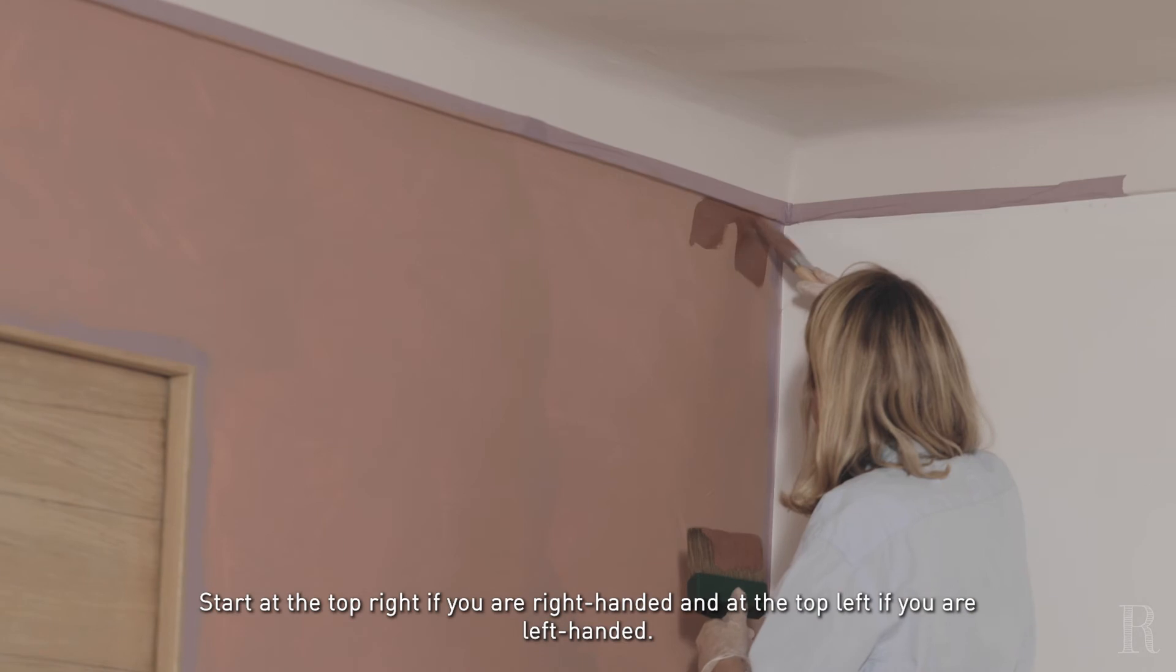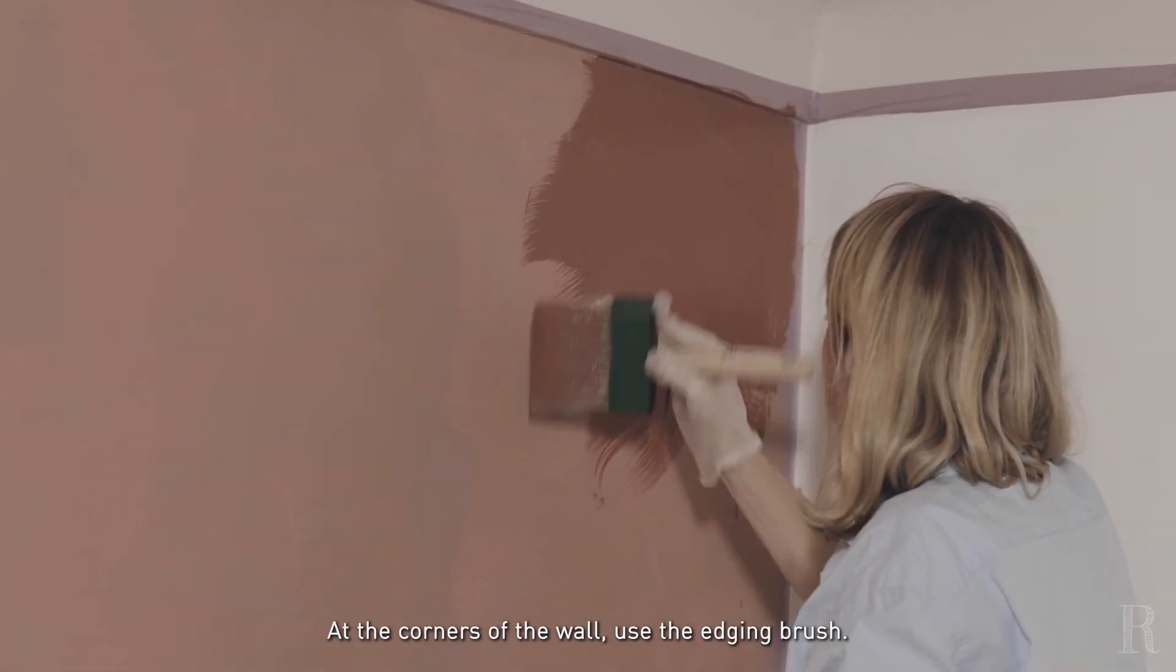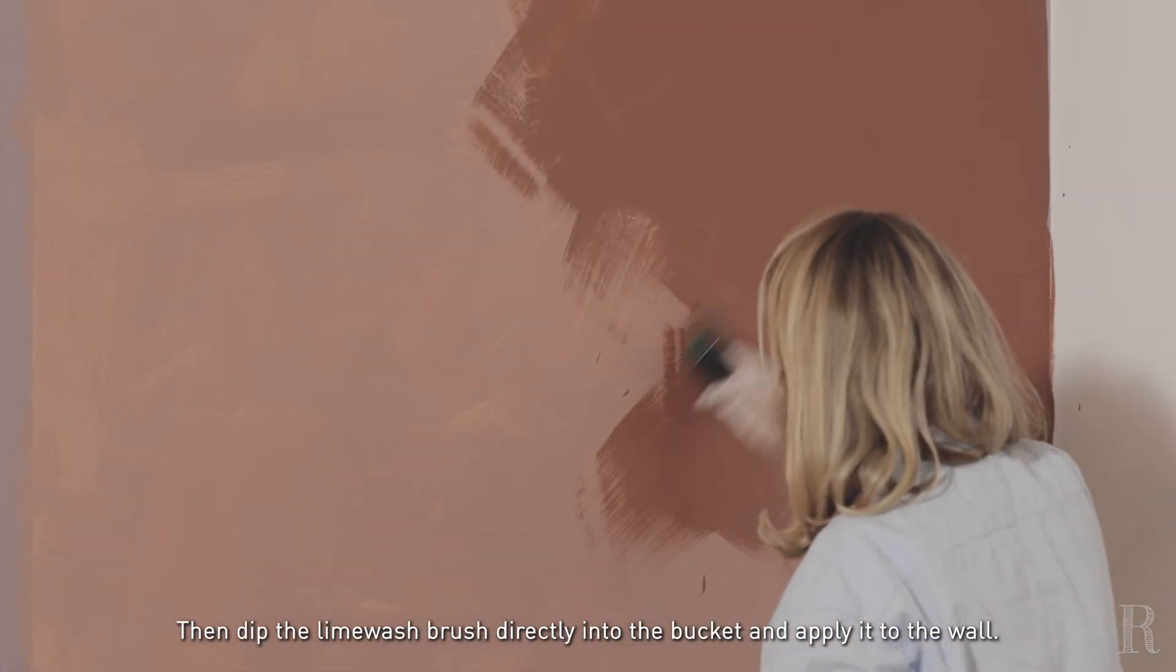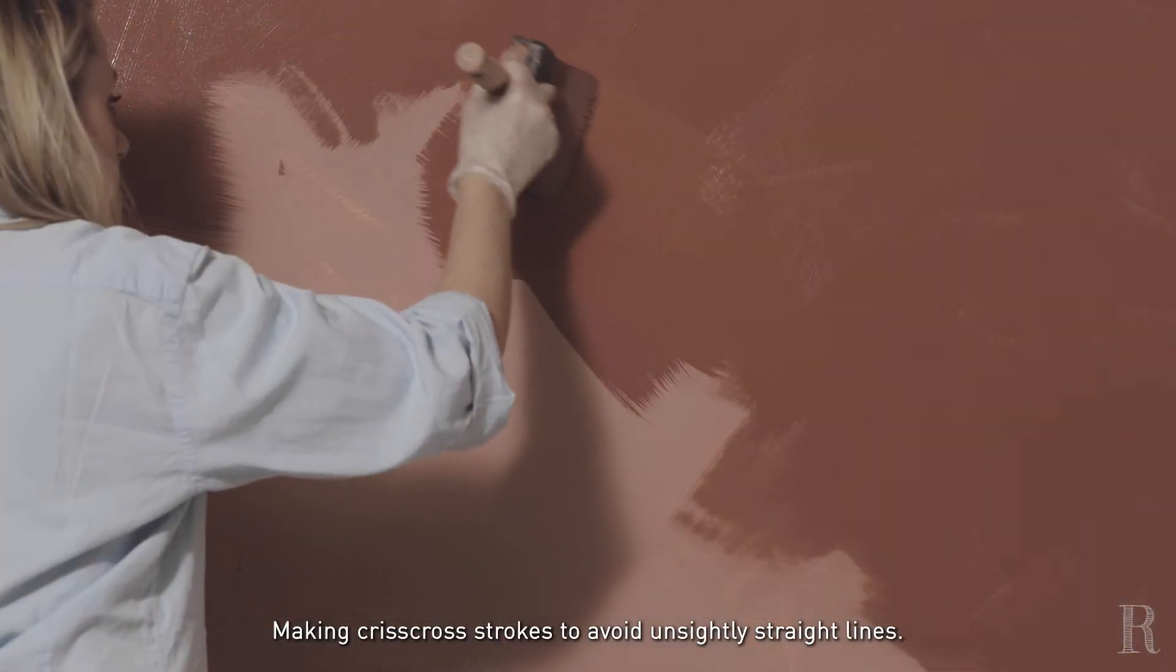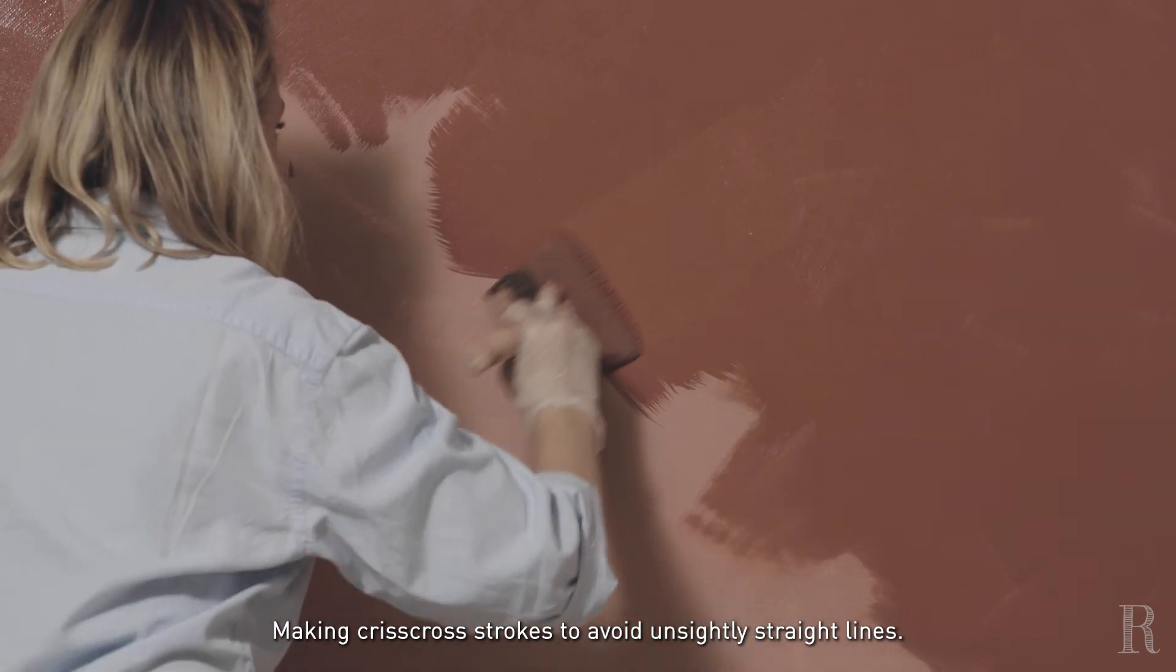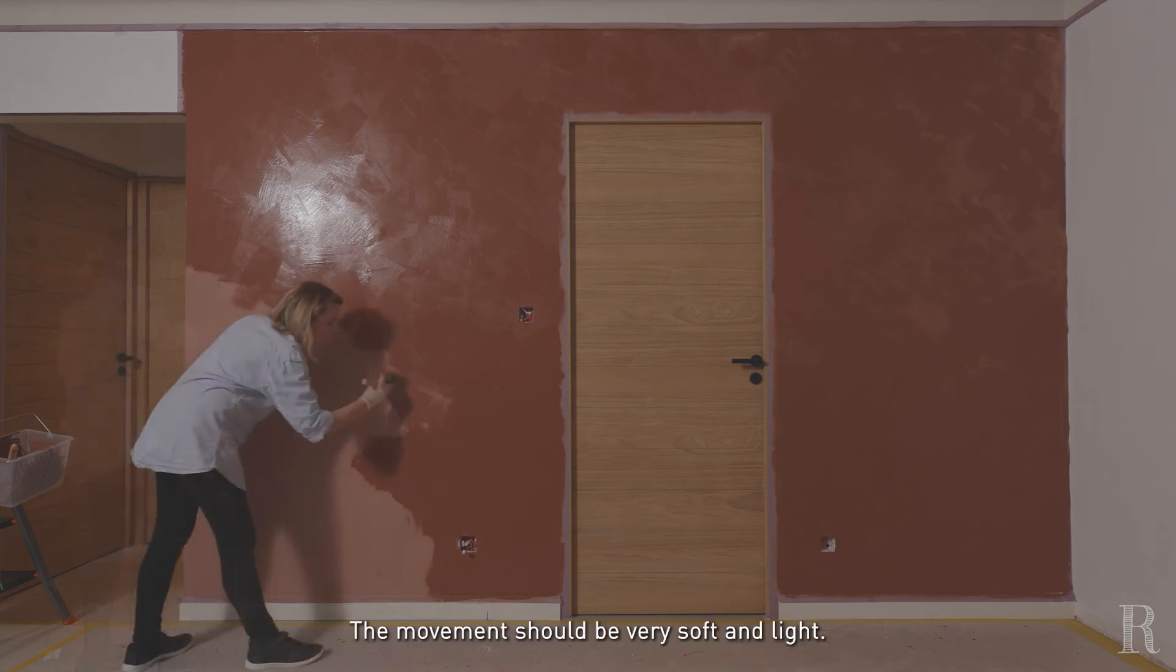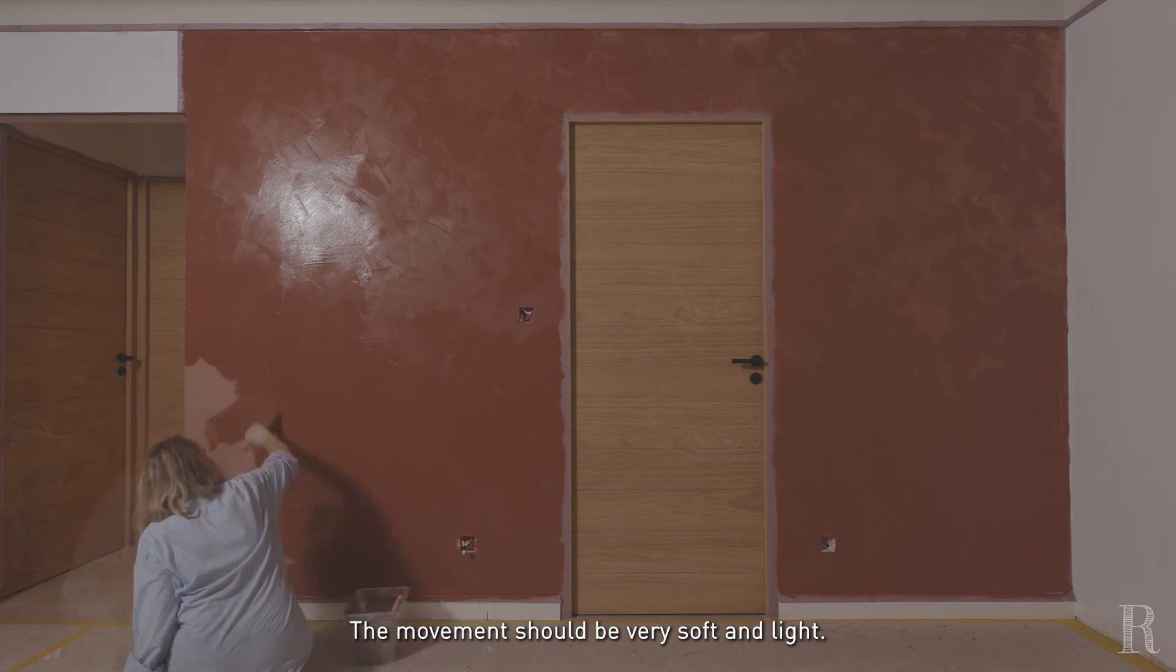Commencez en haut à droite si vous êtes droitier et en haut à gauche si vous êtes gaucher. Au niveau des extrémités du mur, utilisez la brosse à réchampir. Trempez ensuite directement la brosse à chaux dans le seau et venez la déposer sur le mur. Faites des gestes croisés pour éviter que la chaux ne garde en mémoire des lignes droites qui seraient inesthétiques. Votre geste doit être très souple, caressant et léger comme un geste de badigeon.